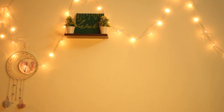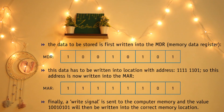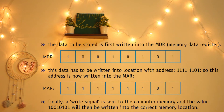Now let us consider the write operation. Again, we will use the memory section shown in this table. Suppose this time we want to show how the value 10010101 was written into memory location 11111101. The data to be stored is first written into the MDR, the memory data register. This data has to be written into the location with address 11111101, so this address is now written into the MAR. Finally, a write signal is sent to the computer memory and the value 10010101 will then be written into the correct memory location.